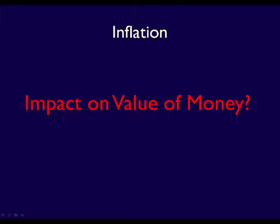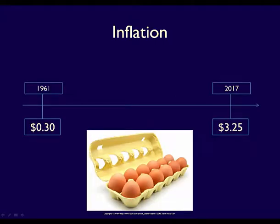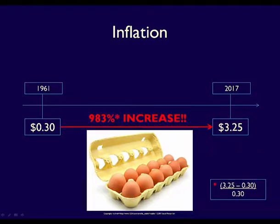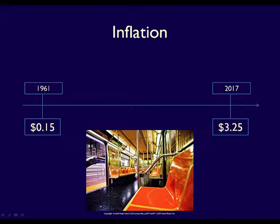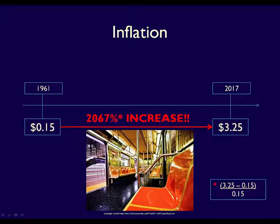Now that you know what inflation is, can you see why it impacts the value of money over time? Let's look at our timeline. In 1961 a dozen eggs cost 30 cents, but in 2017 a dozen eggs cost about $3.25 — or more, depending on the type of egg you buy. That means the average price of a dozen eggs has increased by 983%. That's inflation. We can also ask if the cost of services changes over time. In 1961 a ride on the subway in Toronto on the TTC cost 15 cents. In 2017 the cash fare was $3.25 — a 2,067% increase. As you can see, inflation affects the prices of goods and services over time.